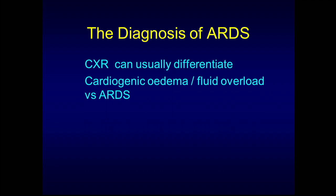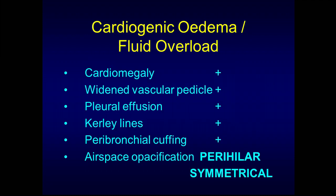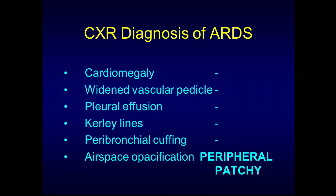How well can chest X-rays differentiate ARDS from cardiogenic pulmonary edema or fluid overload? Reasonably well if you're paying attention. If you've got cardiogenic pulmonary edema you're going to have cardiomegaly, a big fat vascular pedicle, effusions, Kerley B lines, and peribronchial cuffing, with more symmetrical perihilar opacification. In ARDS you don't get any of those features and your airspace opacification is much more patchy and peripheral.